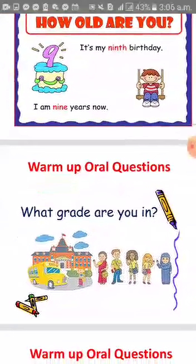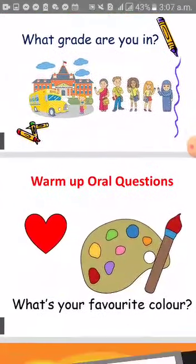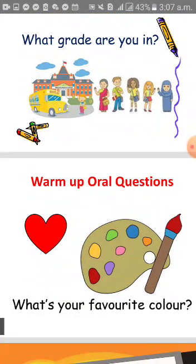When I ask someone about his or her grade, I say: 'What grade are you in?' So he or she will answer, for example: 'I'm in Grade 1.' If I ask you about your favorite color, I say: 'What's your favorite color?' And you will answer, for example: 'My favorite color is red.'